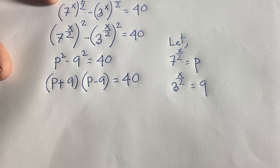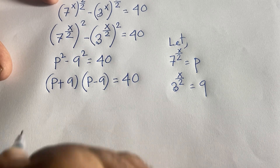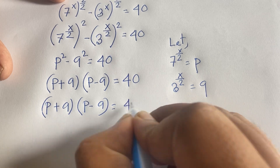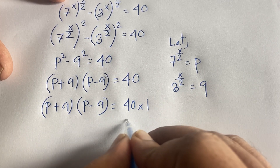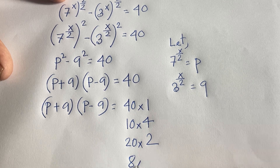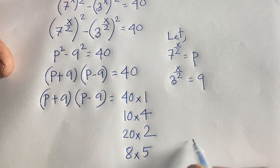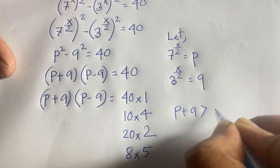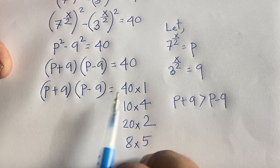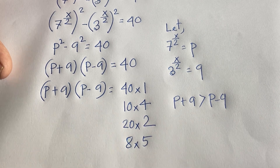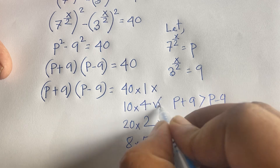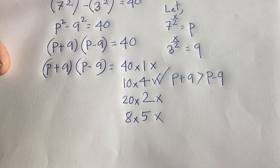We need factor pairs of 40: it can be 40×1, 10×4, 20×2, or 8×5. Since p plus q must be greater than p minus q, and p and q are positive integers, we check each pair. The pairs 40×1, 20×2, and 8×5 are not suitable, so the valid factorization is 10 times 4.